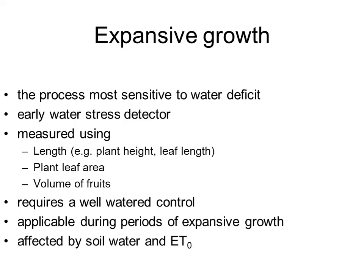Something a little more accurate for detecting water stress is doing measurements of expansive growth. Growth is the most sensitive process to water deficits, and therefore if we can measure growth that will be a very early water stress detector. We can measure growth by measuring length like plant height or leaf length, leaf area, or the volume of fruits. But if we want to use that to detect water stress, we will need to have some plants under well-watered conditions that serve as the control.